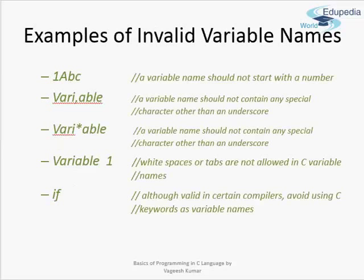Now here are some invalid variable names. For example, 1ABC — a variable name can never begin with a number; it must begin with a letter or an underscore. You cannot use a comma or an asterisk inside a variable name, and you cannot use spaces. These are all invalid. Also, you should avoid using C keywords as variable names. Although some compilers may allow it, you should avoid doing so.